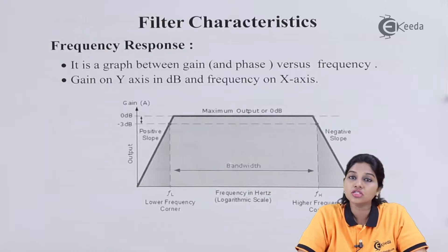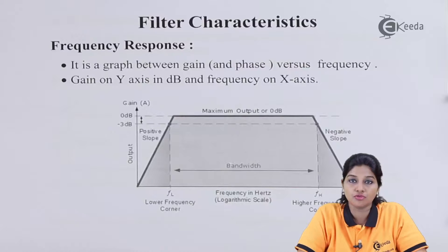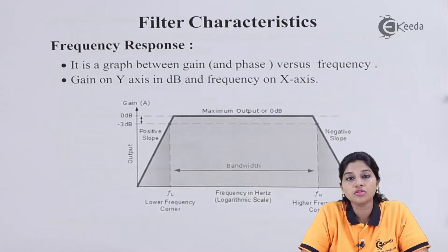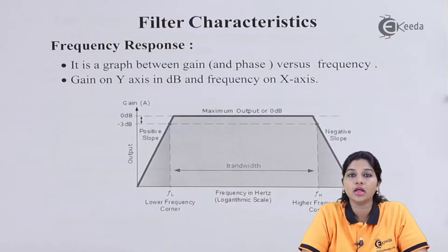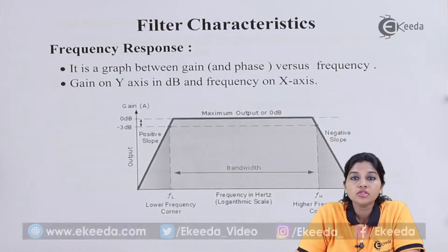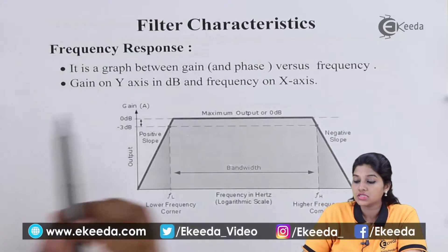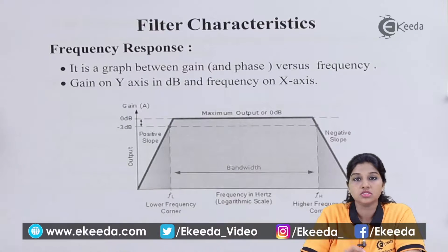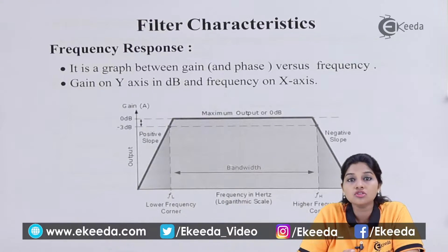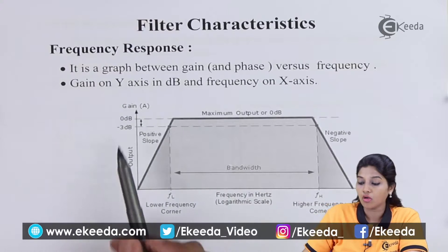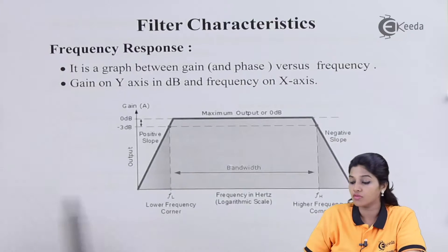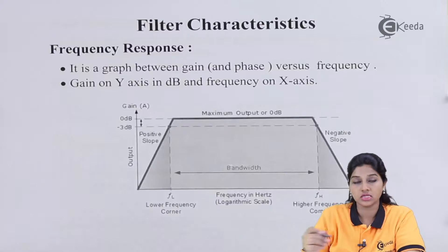The first characteristic of a filter is frequency response. Frequency response is basically a graph between gain and phase versus frequency. The gain is always plotted on the y-axis whereas frequency is always plotted on the x-axis.